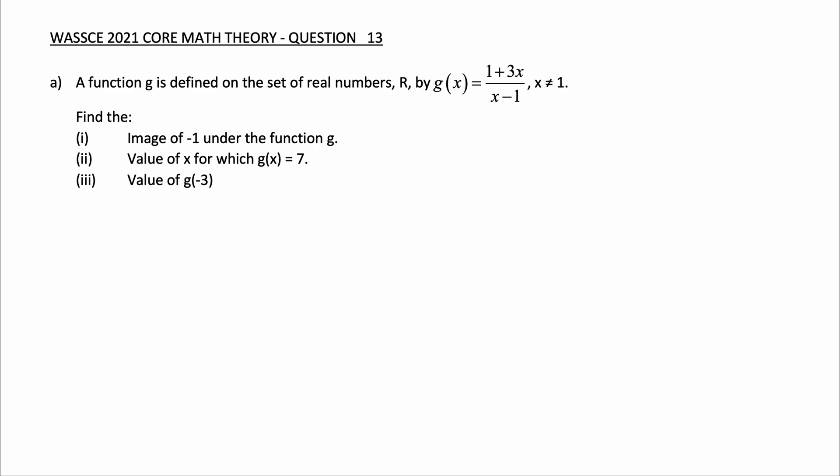Find: (i) the image of negative 1 under the function g; (ii) the value of x for which g(x) = 7; (iii) the value of g(negative 3).